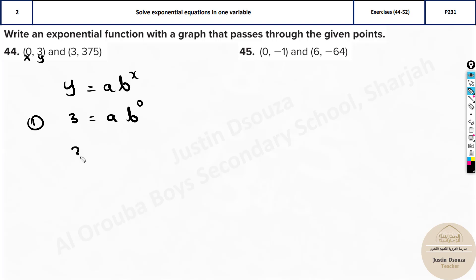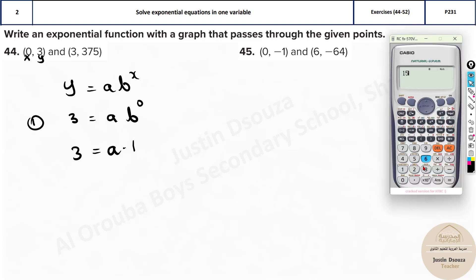So over here it will be 3 equals a multiplied by b to the power 0 is 1. You can just do it in the calculator. Just take any number and raise it to the power 0. It's going to be 1. Say any number. Even if you take a negative number minus 156 to the power 0, it will just be 1. So this is very important to understand.